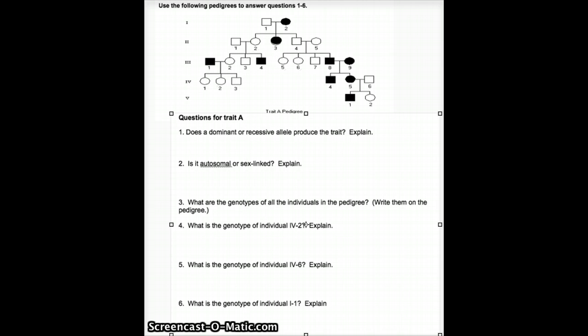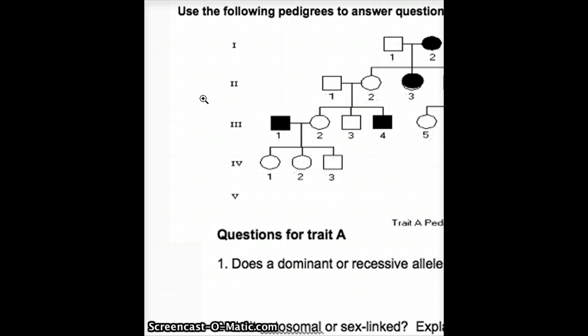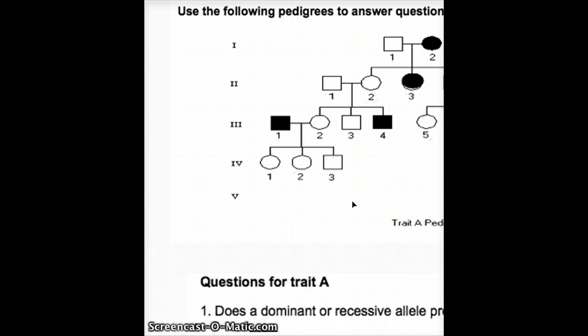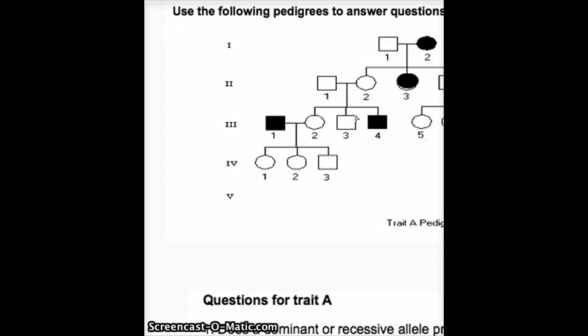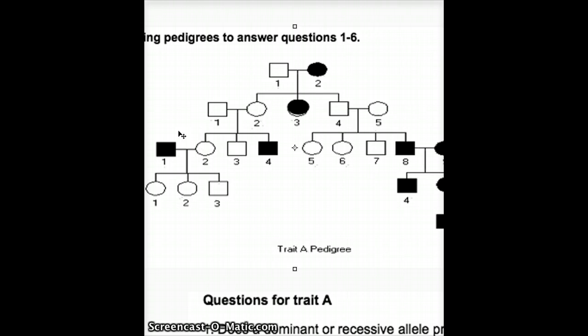Now you want to write down the genotypes of all the individuals in the pedigree, all the ones that you can figure out at least. So, in order to do that, I'm going to zoom in a little bit here and drag that over so you guys can see the whole thing. So, you can see most of it here. We're missing generation 4 numbers 5 and 6 and generation 5 numbers 1 and 2, but we got most of them.